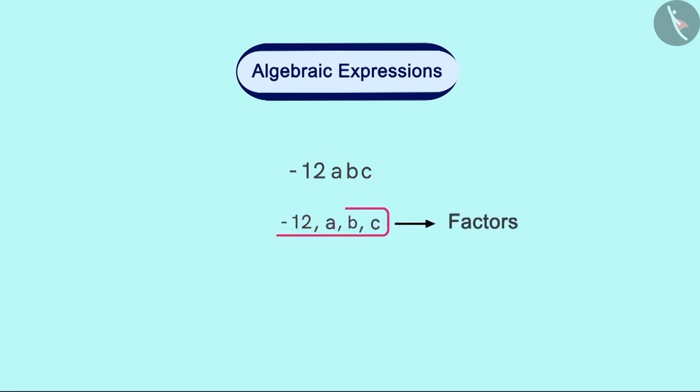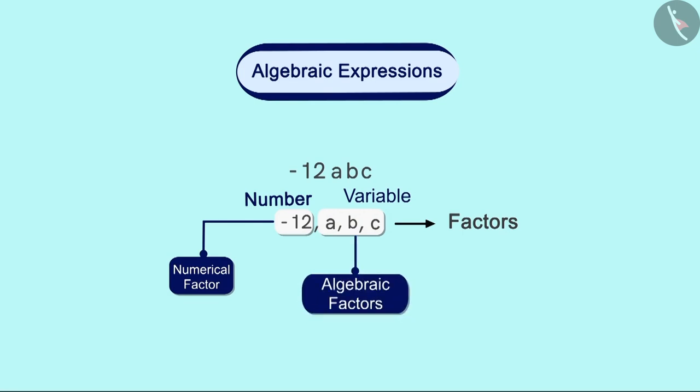Now let's look at these four factors. The first factor, -12, is the number, so we call it a numeric factor. And the remaining three factors, a, b, c, are variables and we call them algebraic factors. Numeric factor is known by yet another name. Numeric factors are commonly known as coefficient. So -12 is the coefficient of this term.